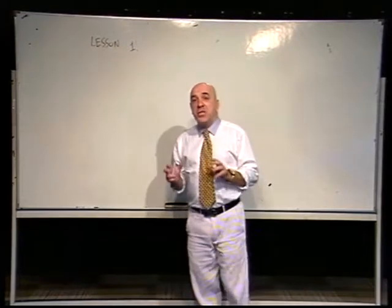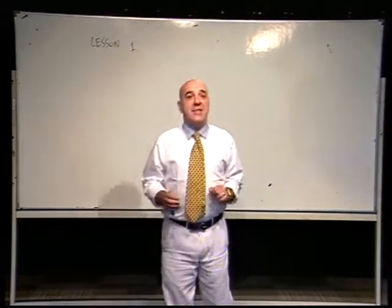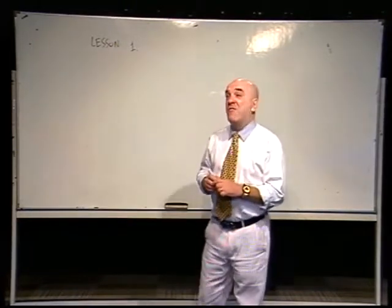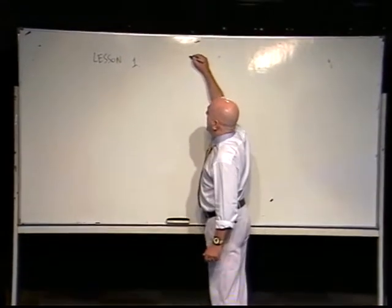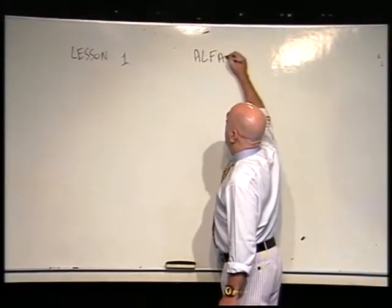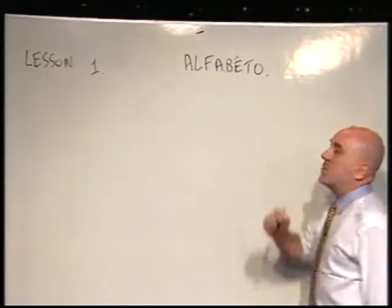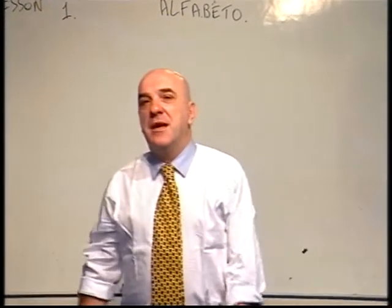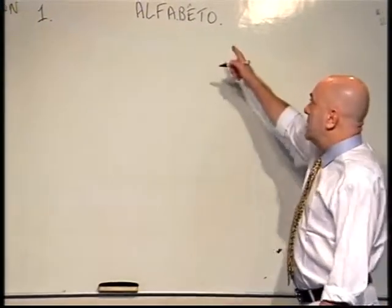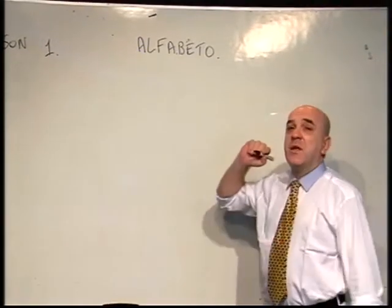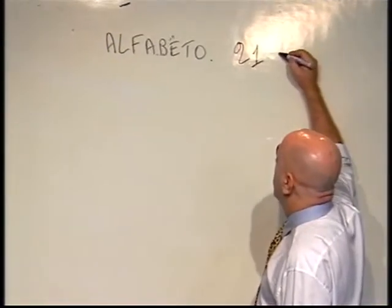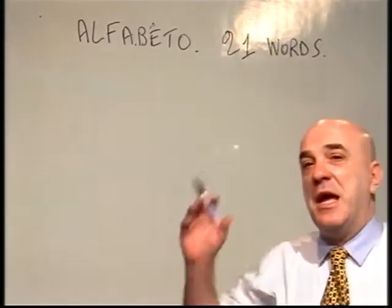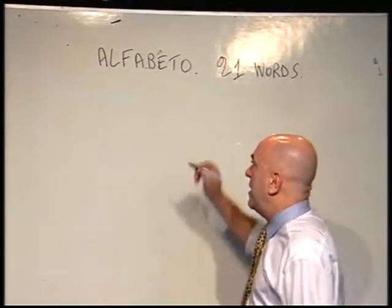But before going deeply into the gender and how to understand if one thing is masculine or feminine, for lesson number 1 I would like to draw your attention to our alphabet — the Italian alphabet. Alfabeto, that means alphabet. I want you to repeat after me how we pronounce the single letters. The Italian alphabet has 21 letters. I will write it down here and after I will pronounce it and you repeat after me.